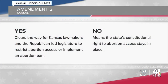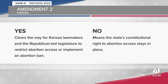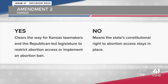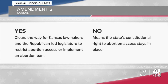Here's what yes on two means: a yes vote clears the way for Kansas lawmakers and the Republican-led legislature to restrict abortion access or even implement an abortion ban. No on two means the state's constitutional right to abortion access stays in place.